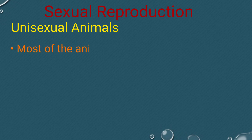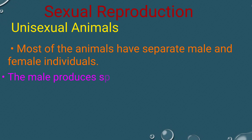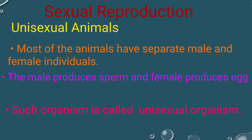Unisexual Animals. Most of the animals have separate male and female individuals. The male produces sperm and the female produces egg. Such an organism is called a unisexual organism.